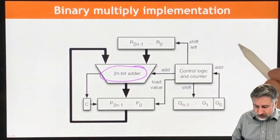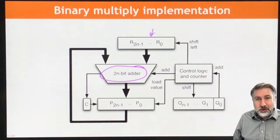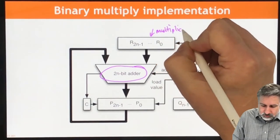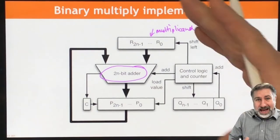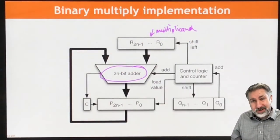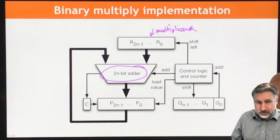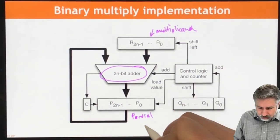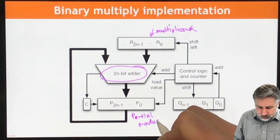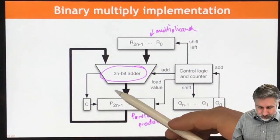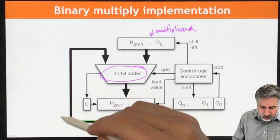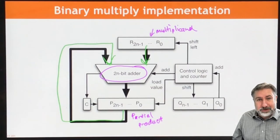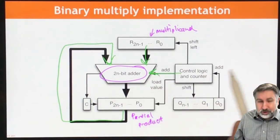First we're going to take one number here, which is the multiplicand. That number is going to be added to — or not added to — the partial product as we go. So this is going to be the partial product. Each time we go through this algorithm, we're going to take the result from the partial product, feed it back into the adder, and then add the result from the multiplicand. And we're going to have to decide whether or not we're going to add.